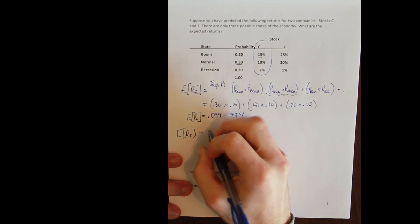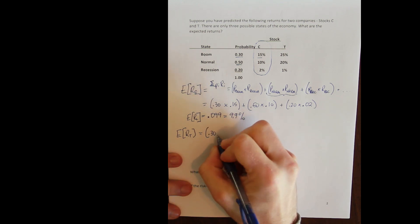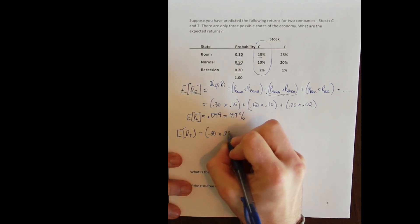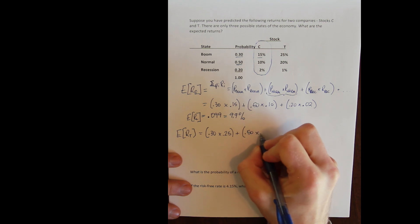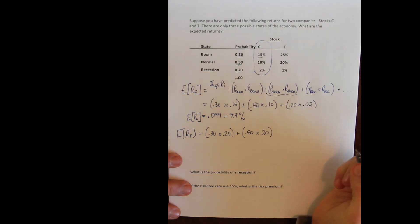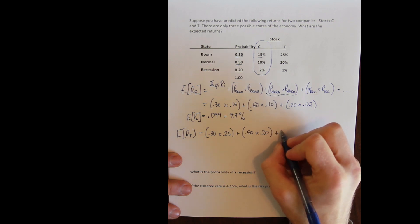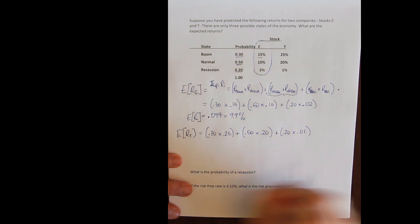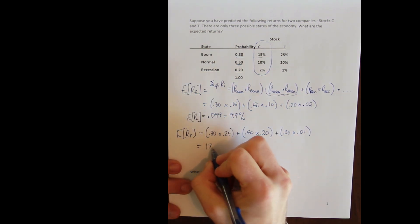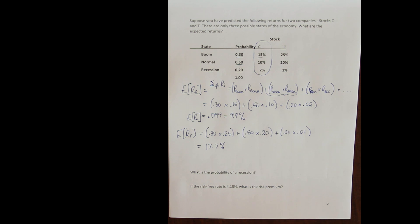For Stock T we do the same thing with the same state probabilities but different outcomes. The probability of boom is 30% and T has a 25% return in the boom. A 50% chance of a normal state and T has a 20% return in the normal state. Finally a 20% chance of a recession in which case T makes only 1%. Doing the algebra, we get 17.7% as Stock T's expected return.